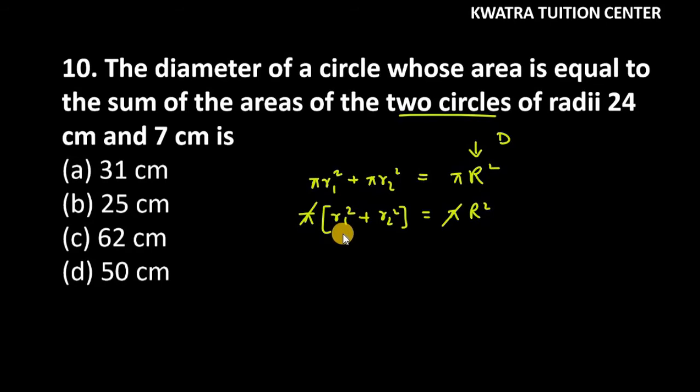You have r₁, it is 24, you have r₂, it is 7 cm. So 24² + 7² = R².